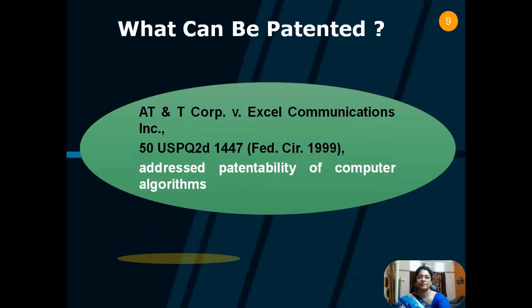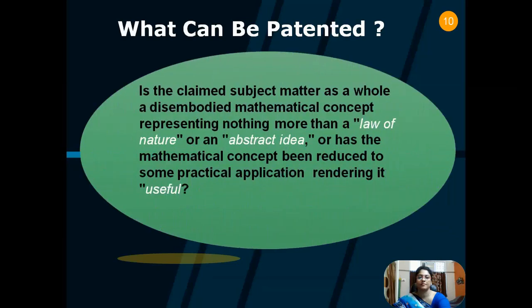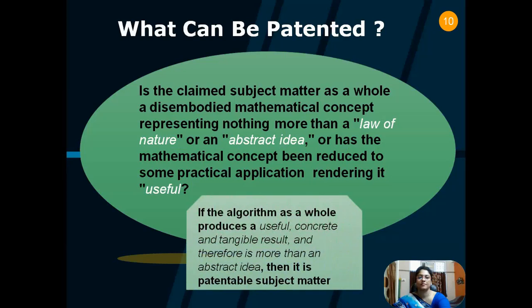AT&T Corp. v. Excel Communications in 1999 addressed patentability of computer algorithms. The key question is: is the claimed subject matter as a whole a disembodied mathematical concept representing nothing more than a law of nature or an abstract idea? Or has the mathematical concept been reduced to some practical application, rendering it useful? A mathematical concept can be patented so long as it has been reduced to some practical application. If the algorithm as a whole produces a useful, concrete, and tangible result and is more than an abstract idea, then it is a subject matter of patent. Otherwise, a simple algorithm cannot be patented.